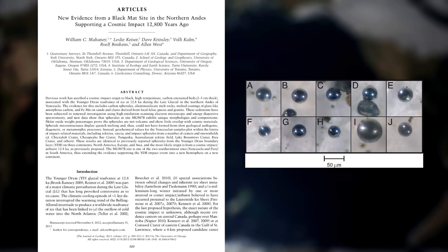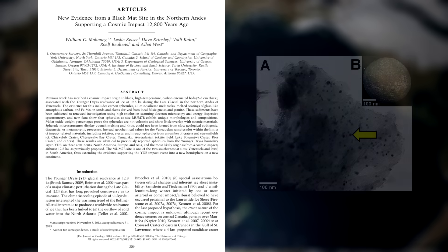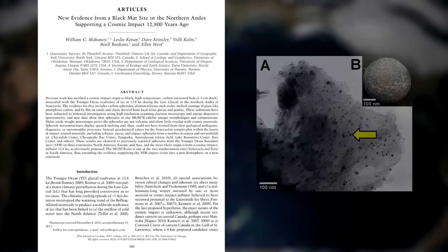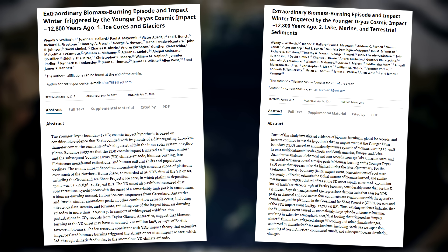These boundary layers contain things like tiny round magnetised grains called microspherules, which form when a material is heated and rapidly cooled. Also other magnetised grains of sediment, carbon spherules, hollow round carbon molecules called fullerenes and nanodiamonds are also commonly found in these layers. Chemical analysis also revealed spikes in iridium, nickel, charcoal and soot concentrations.